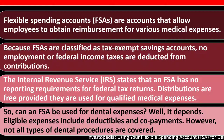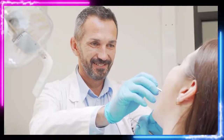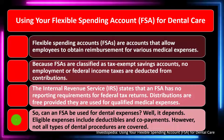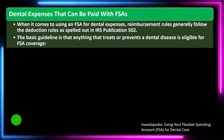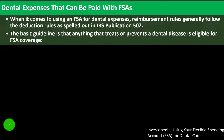Eligible expenses include deductibles and copayments. However, not all types of dental procedures are covered — you can imagine the ones that might not be, like teeth whitening and Invisalign-type straightening, which fall into the cosmetic category. When it comes to FSA dental expense reimbursement, rules generally follow the deduction rules spelled out in IRS Publication 502. The basic guideline is that anything that treats or prevents a dental disease is eligible for FSA coverage.